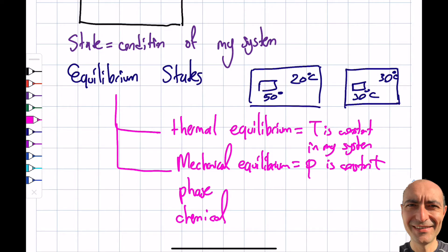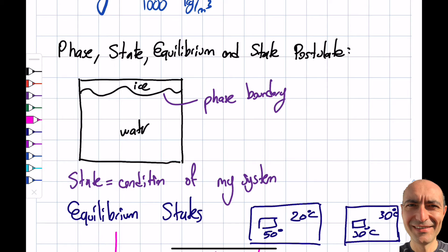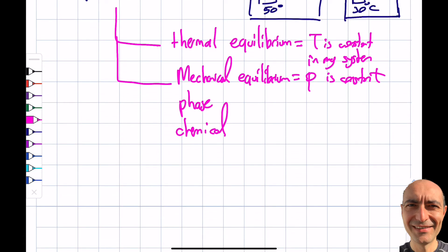All right, so let's talk about the question, an important question that I asked. So I said that the state is defined by the properties. So how many properties do I need? So for that we have something called the state postulate. The important thing that I want to start with here is that this is a simple compressible system.